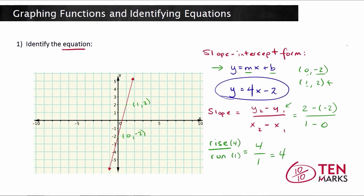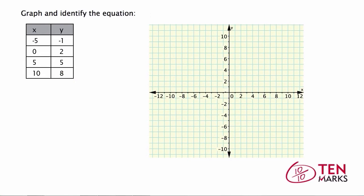Now let's try another problem together. In this problem, you want to graph and identify the equation. You've been given a table of input and output values. The x values correspond to the x coordinates in the ordered pair (x, y). So you have the pairing negative 5, negative 1, which means that when x equals negative 5, y equals negative 1. Go into your graph and find that point.